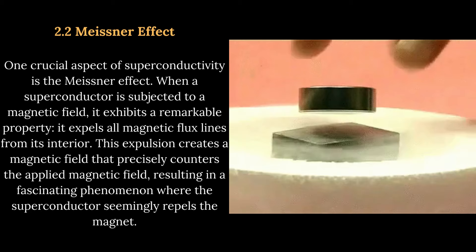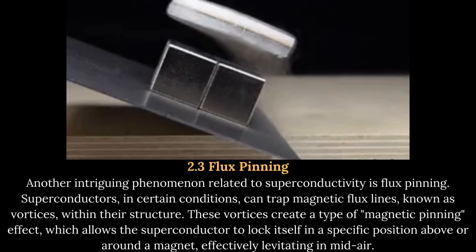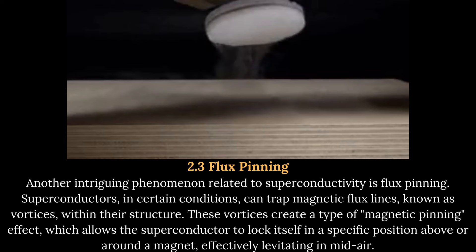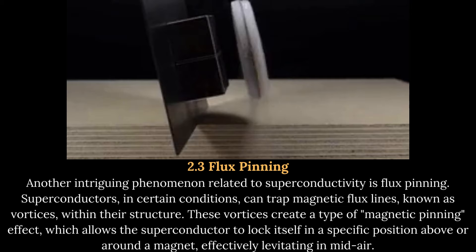Flux Pinning: Another intriguing phenomenon related to superconductivity is flux pinning. Superconductors, in certain conditions, can trap magnetic flux lines, known as vortices, within their structure. These vortices create a type of magnetic pinning effect, which allows the superconductor to lock itself in a specific position above or around a magnet, effectively levitating in mid-air.